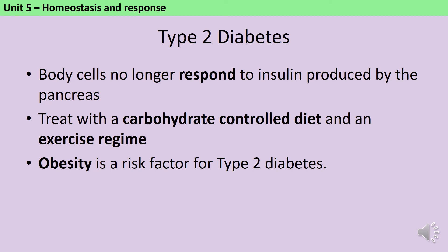Instead, type 2 diabetes is treated with a carbohydrate-controlled diet — people are told to count calories and not have too much sugar — and also an exercise regime, because these things help to keep blood sugar more stable. A big risk factor for type 2 diabetes is obesity, so basically the heavier you are the more likely you are to develop it.